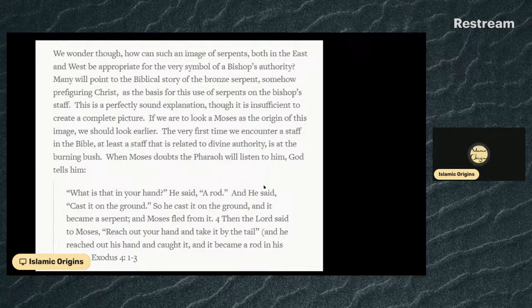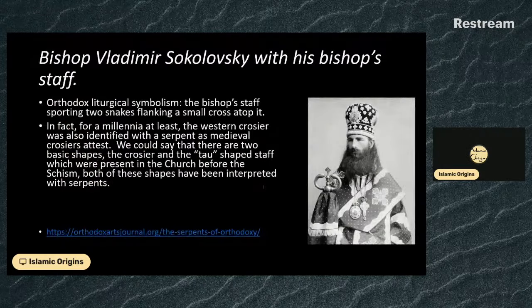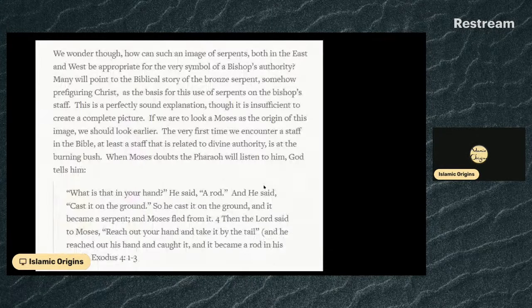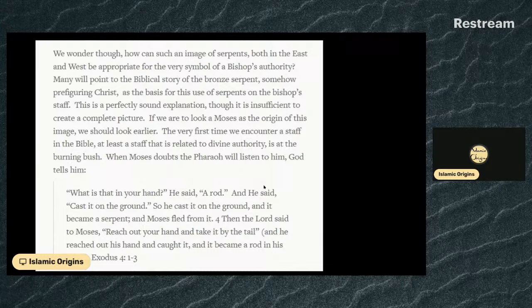Further on that, I've taken this from an Orthodox website. We wondered: how can such an image of serpents — both in the east and west — be appropriate for the very symbol of a bishop's authority? Many will point to the biblical story of the bronze serpent as prefiguring Christ as a basis for this use of serpents on the bishop's staff. This is a perfectly sound explanation, though insufficient to create a complete picture. If we look at Moses as the origin of this image, we should look earlier — to the very first time we encounter a staff in the Bible related to divine authority.